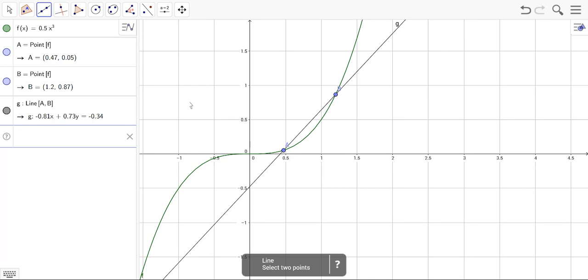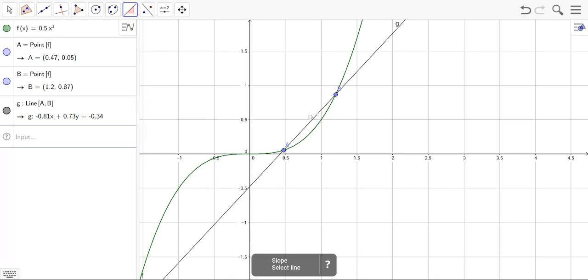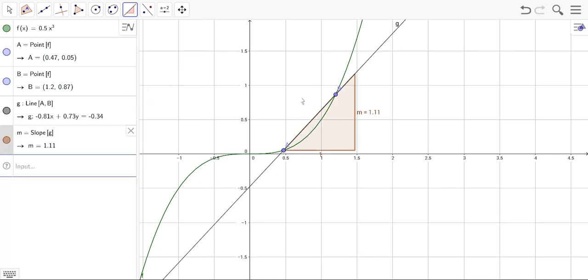Now, to get the slope of this secant line, we can either type in slope of G or there is a tool for that. If you go up here, you click on slope and click on the line. The thing about GeoGebra is that it has a lot of tools built in along the bar at the top here and those tools will be different depending on which of the apps you're using.